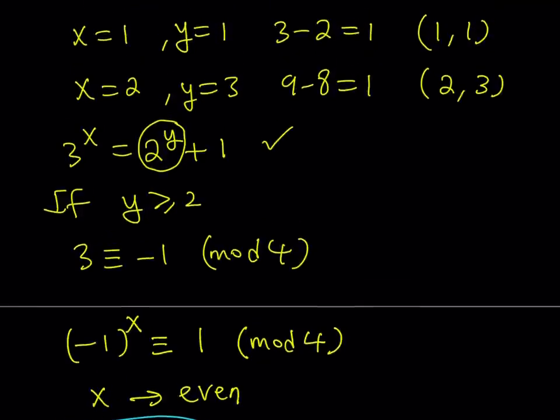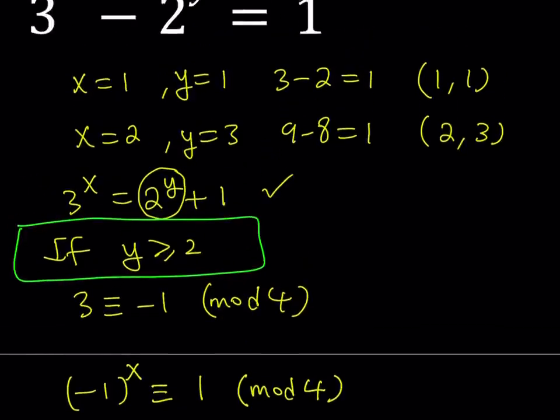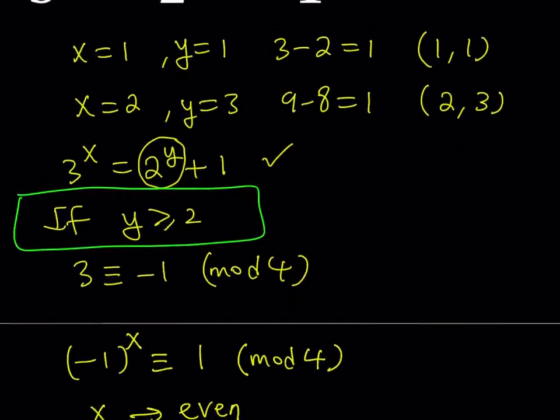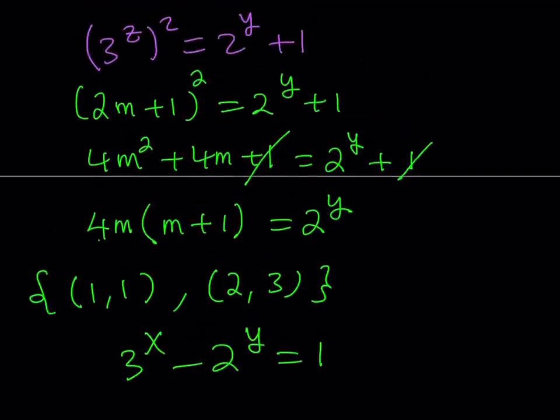So let's go back and see what happens. We said that if this is true, then the following holds, but unfortunately that doesn't really give us anything. We have (1,1) and (2,3) as our solutions to this equation, which can be written as 3 to the power x minus 2 to the power y equals 1.